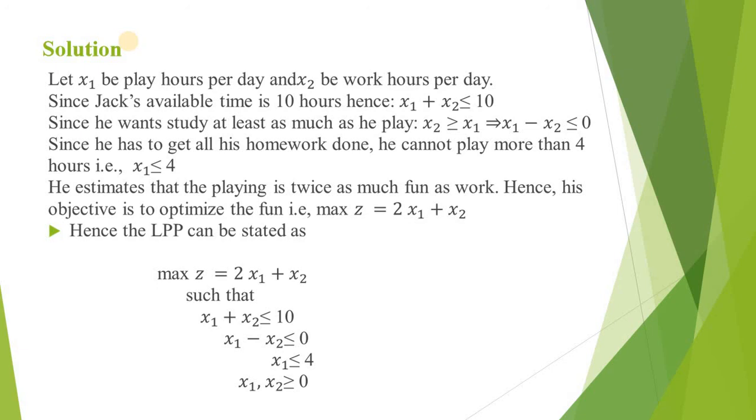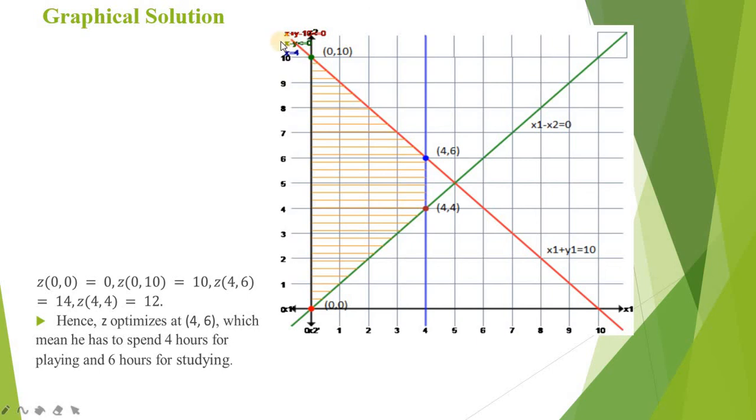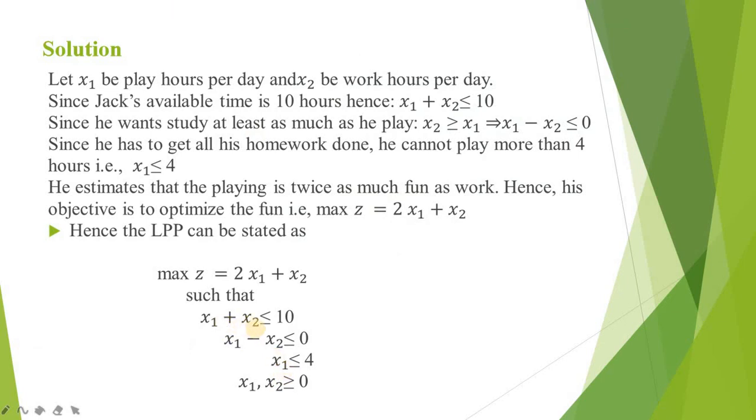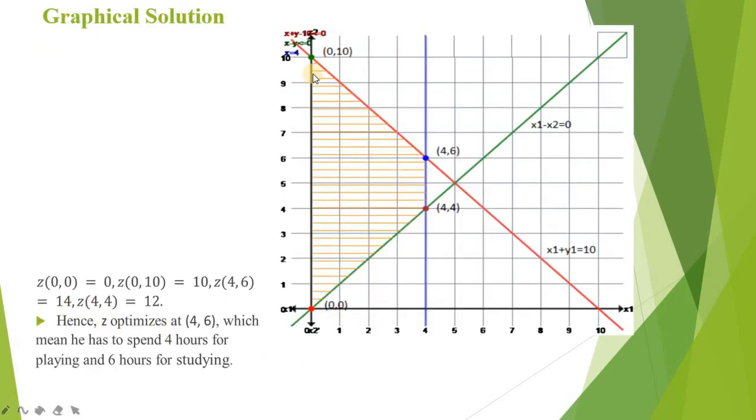Here is the graphical representation. The straight lines are formed by each inequality converted to an equation. We check all the points of intersection: (0,0), (0,10), (4,6), and (4,4). The optimum value will always lie at the point of intersection of these constraint lines. Among (0,0), (0,10), (4,6), and (4,4), the point (4,6) has the maximum value of z, which means he has to spend about 4 hours for playing and 6 hours for studying.